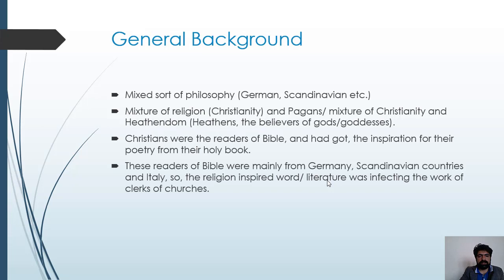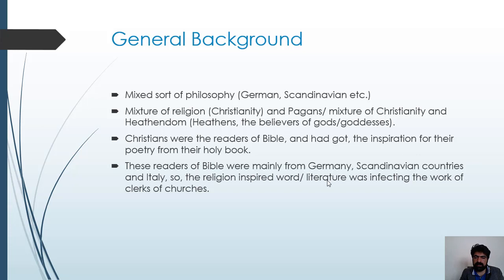Let's look at some general background of that period. The literature of the Anglo-Saxon period presents a mixed sort of philosophy or ideas, because the English nation — the three warrior tribes, Angles, Saxons, and Jutes — had come from different places. Their philosophy contains German and Scandinavian ideas. We also see a mixture of religion: Christianity and paganism, or non-believers. So in the literature we find both religious ideas and pagan ideas.